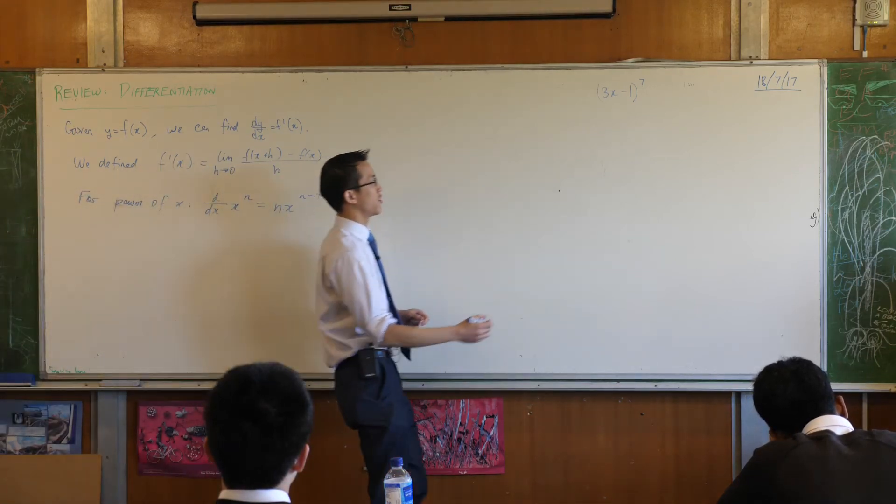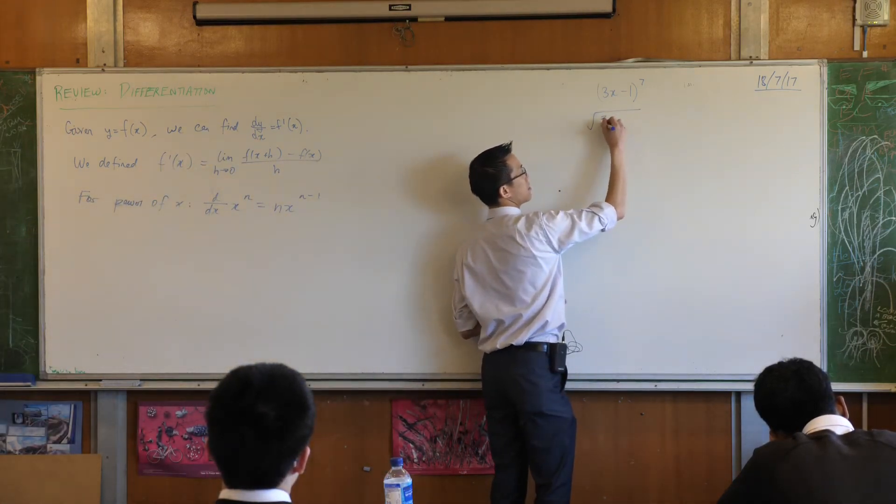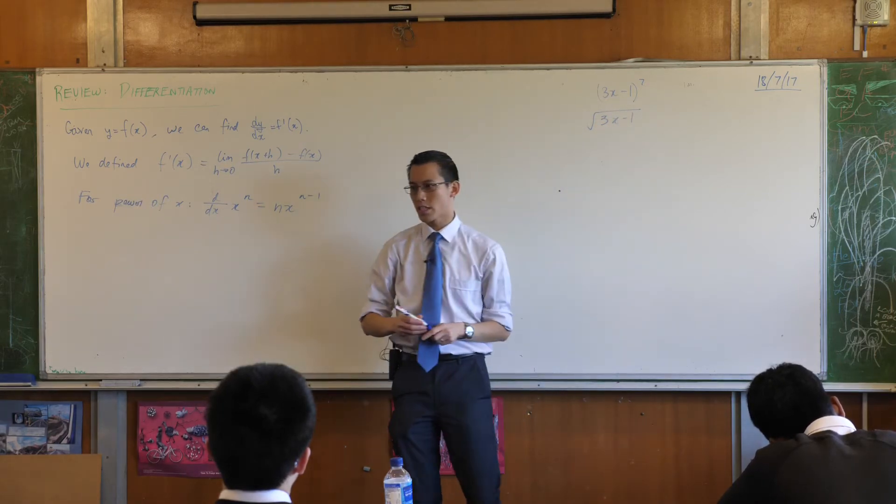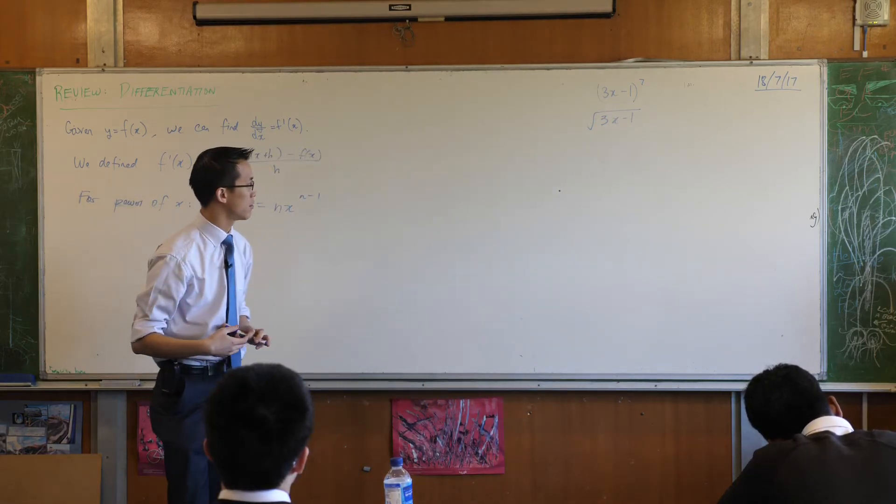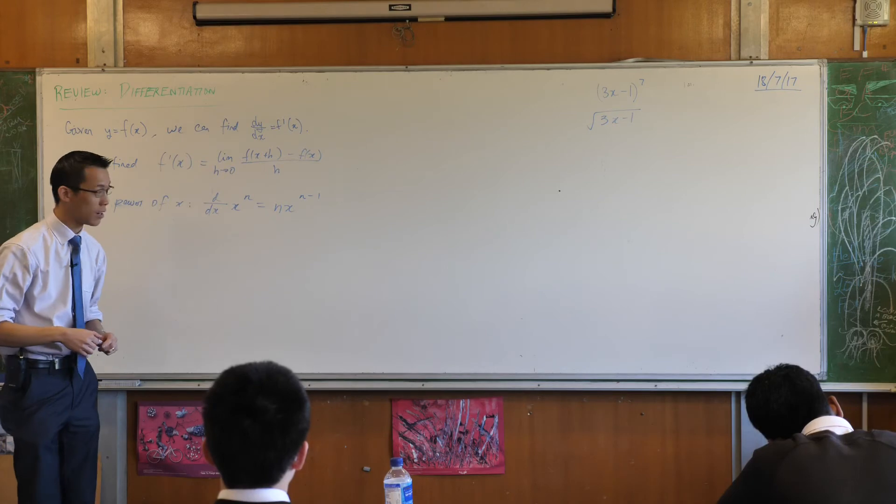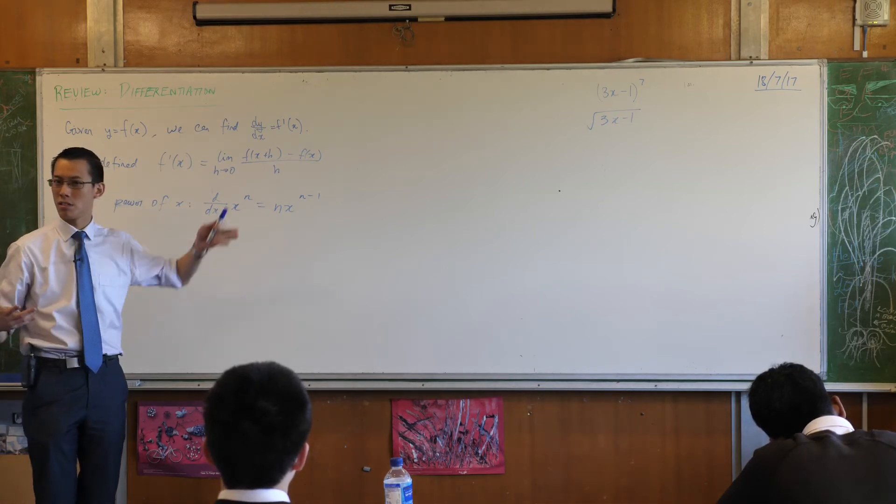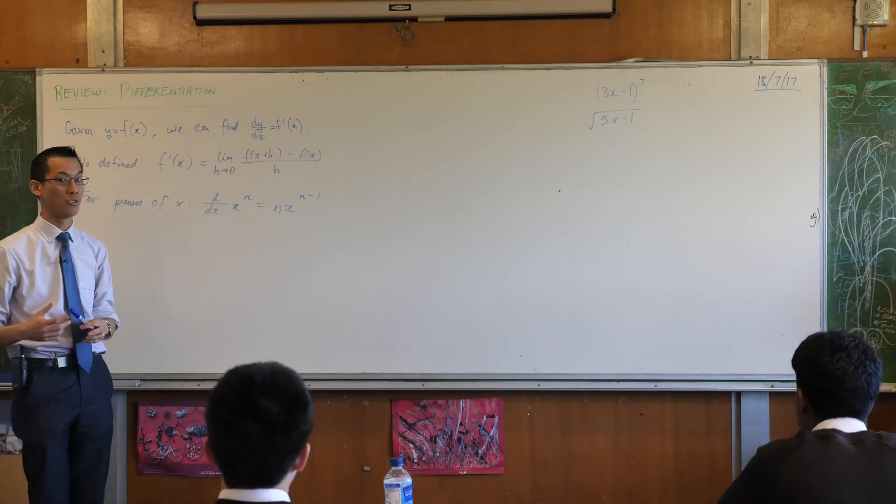Not only that, but there were some functions, like say this, where there was no expanding to do. Binomial theorem is not going to help you here, and so what can we do to differentiate these guys? So we introduced a new rule. Do you remember what it was? Chain rule. Very good.